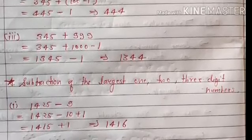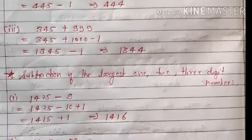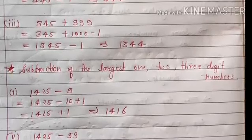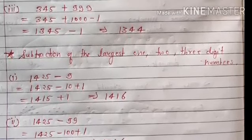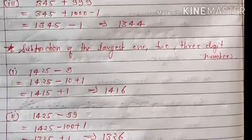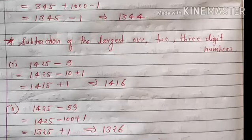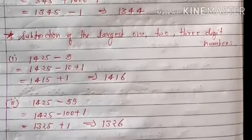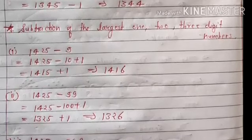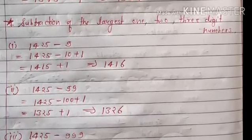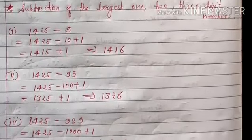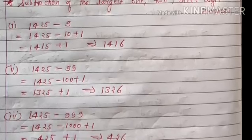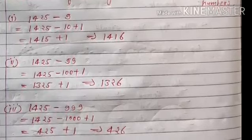Subtraction of the largest 1, 2, or 3-digit numbers. Example 1: 1425 − 9 = 1425 − (10−1) = 1415 + 1 = 1416. Example 2: 1425 − 99 = 1425 − (100−1) = 1325 + 1 = 1326. Example 3: 1425 − 999 = 1425 − (1000−1) = 425 + 1 = 426।